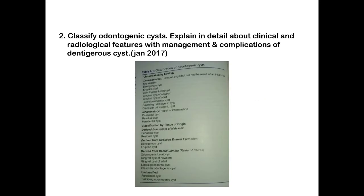Under benign tumors of the jaws, a long essay question that can be asked is the classification of odontogenic cysts, which can be found in standard textbooks such as Anal Gomes or Ravikiran Ongole, using Shear's classification. It is classified based on etiology into developmental and inflammatory. Developmental cysts include the dentigerous cyst, eruption cyst, odontogenic keratocyst, gingival cyst of the newborn, adult lateral periodontal cyst, calcifying odontogenic cyst, and glandular odontogenic cyst.